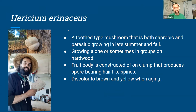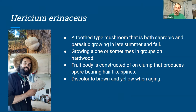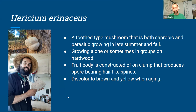One of my favorite mushrooms is Hericium erinaceus — lion's mane. It is both saprophytic and parasitic, growing in late summer and fall. It grows alone or sometimes in groups on hardwood. The fruit body is a clump that produces spore-bearing hair-like spines and discolors to brown and yellow with aging. I actually cultivated and grew this species myself — it's a really cool mushroom and I suggest researching it further.